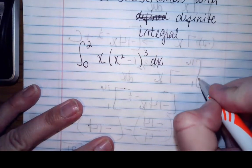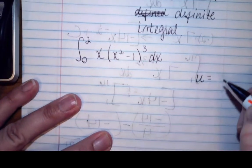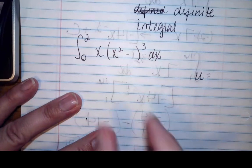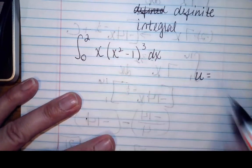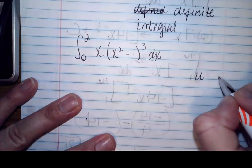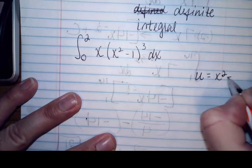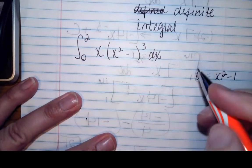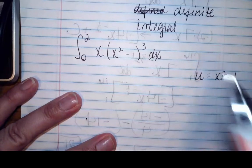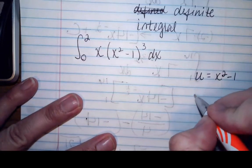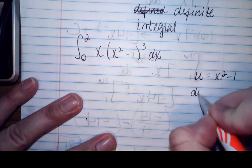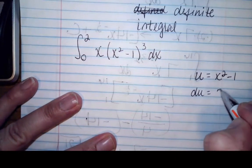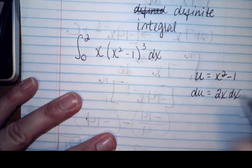So we're going to use u-substitution to make it easier. Remember, tell me what is in your inside — the inside of a radical, the inside of a denominator, the inside of parentheses. So the inside of my parentheses is x-squared minus 1. Once you've identified that, we're going to take the derivative of both sides. The derivative of u is du, and the derivative of the right is going to be 2x dx.